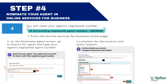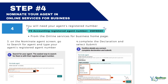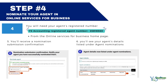On the Nominate Agent screen, go to Search for Agent and type your agent's registered agent number — YNS Accounting's is 25818560. Once completed, you can review the details of your agent nomination. Tick the box and submit the declaration. You will then receive a nomination submission confirmation that you can save as a PDF. Your agency will be listed under Agent Nominations.